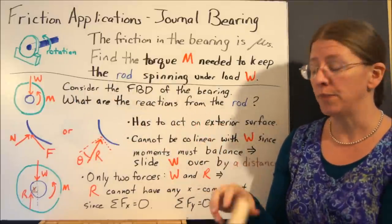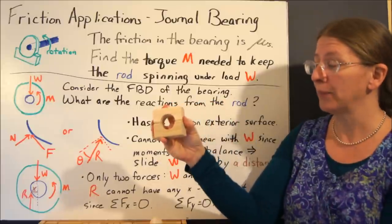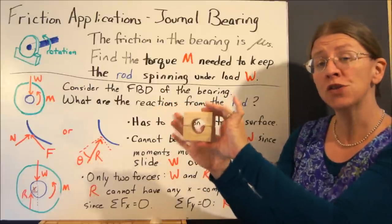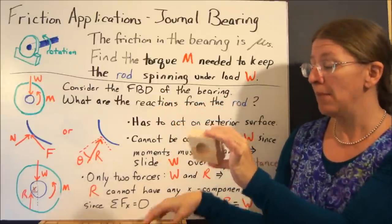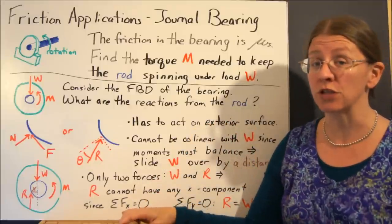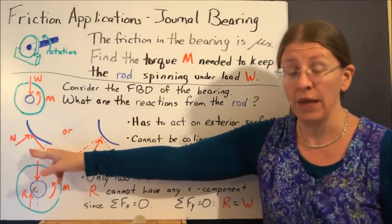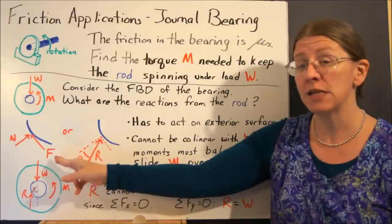What are the reactions from the rod? So once I consider the actual bearing, I know that on the surface of this bearing I must have a normal force and a friction force like any other sort of friction situation. So this N and this F are the same as they were before. N is normal to the circle, F is tangent to the circle.